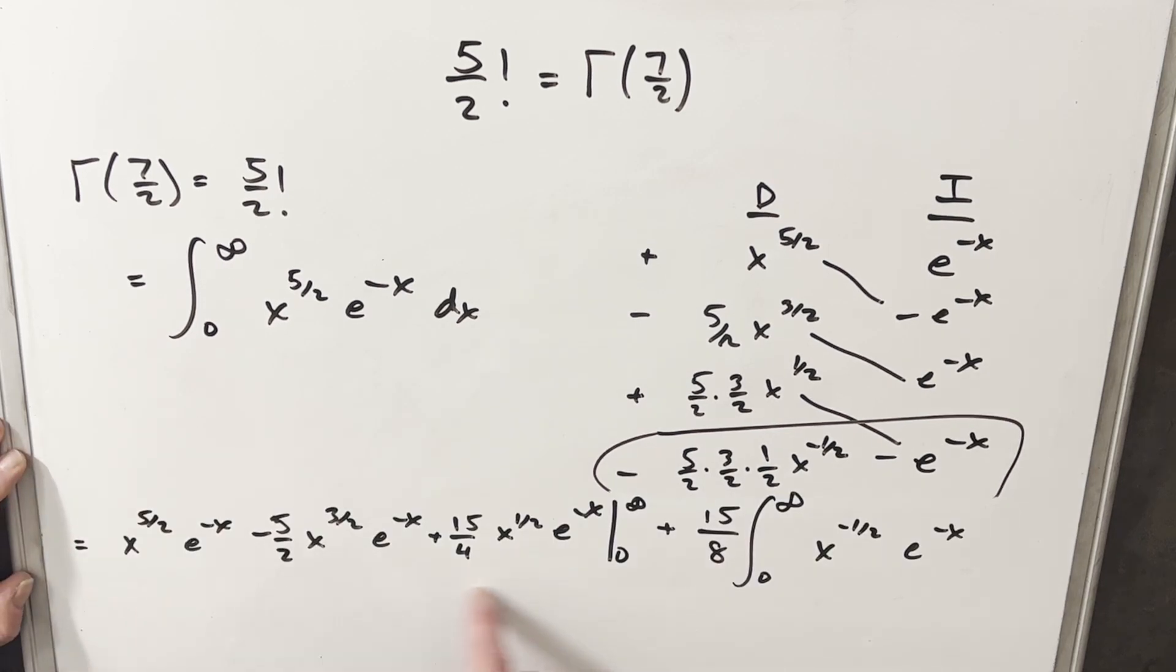Let's start with this whole long thing on the left here. Now we're evaluating this from zero to infinity. Now let's see what happens when we plug infinity into this. In every one of these terms we have e to the minus x, which is the same thing as one over e to the x. Because the exponential is growing much faster than this x term, at infinity all this is going to zero.